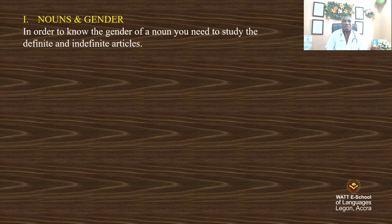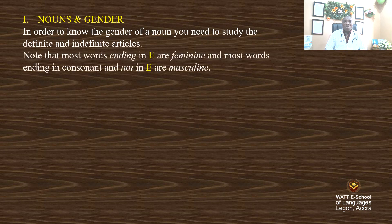Let's quickly have a look at the lesson: noun and gender. In order to know the gender of a noun, you need to study the definite and indefinite articles. Note that most words ending in E are feminine, and most words ending in consonants and not in E are masculine.